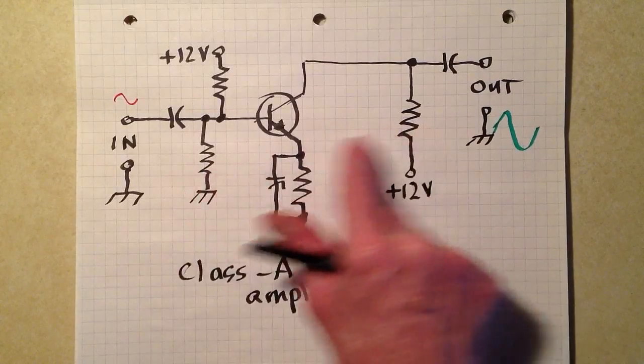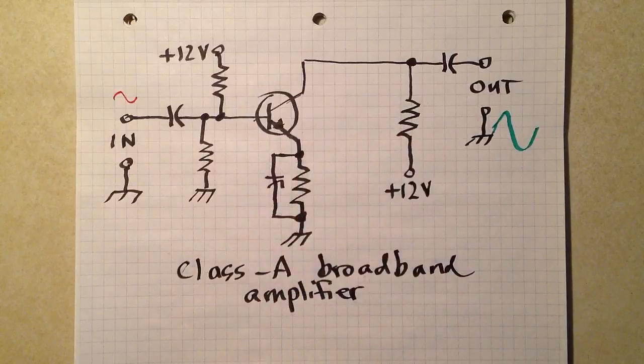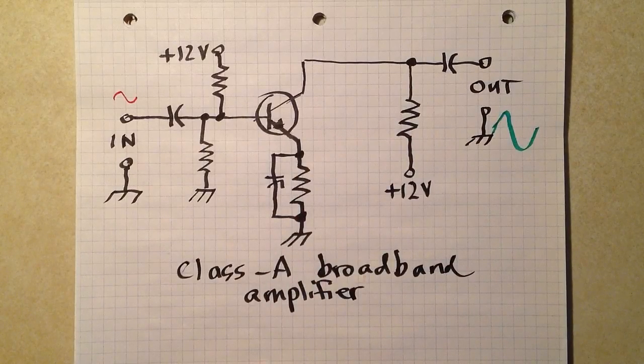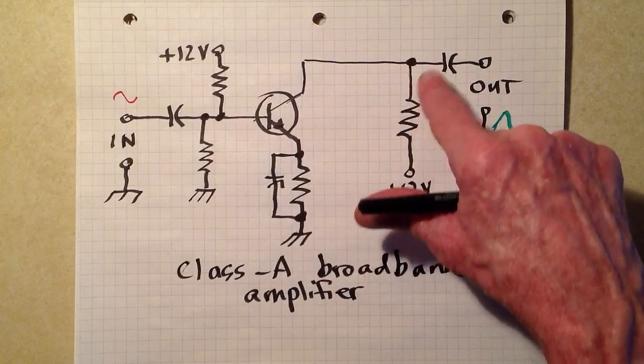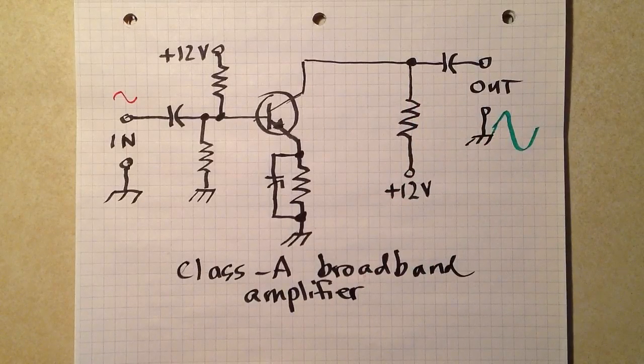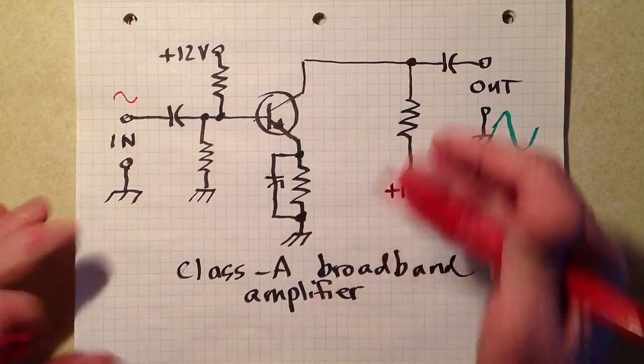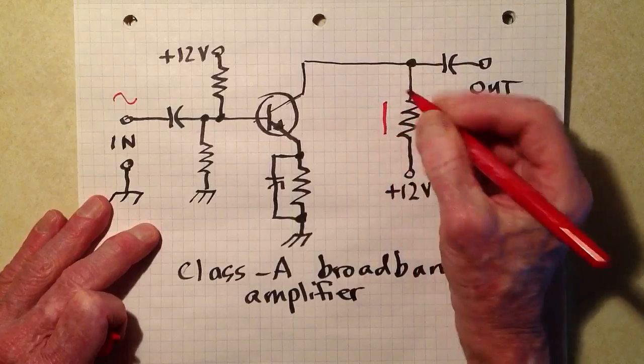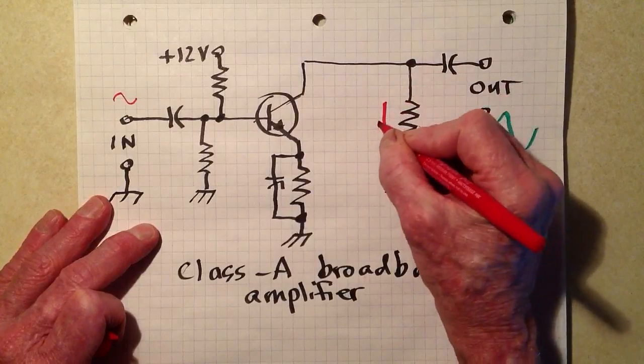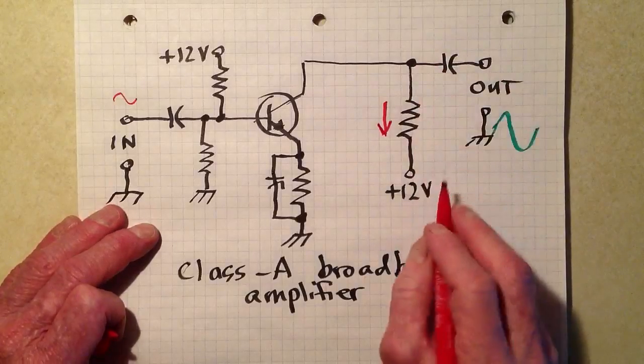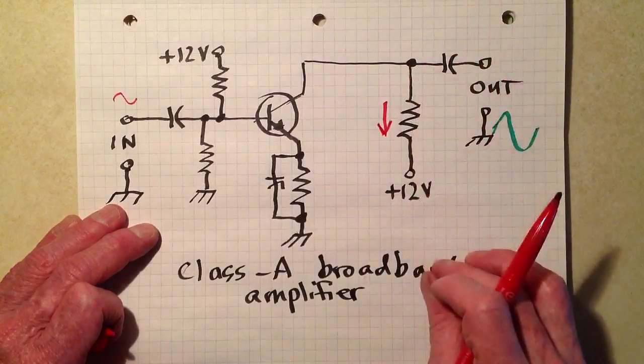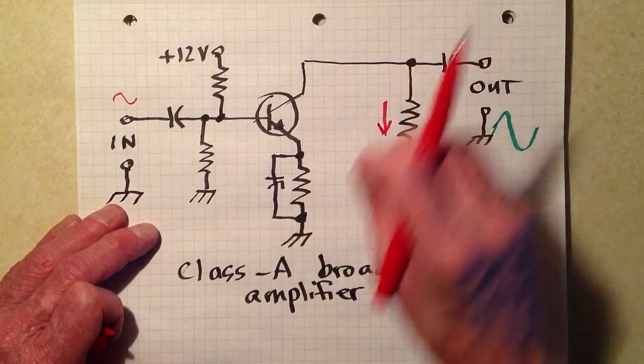These resistors right here help to determine the input and output impedance as well. So we get a fluctuating current through this resistor right here, fluctuating current.